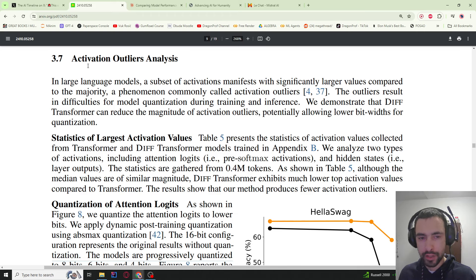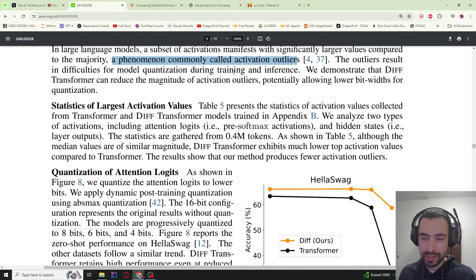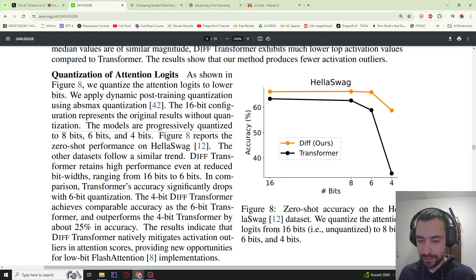They also reduce outlier activations in large language models. A subset of activations manifest with significantly larger values compared to the majority, a phenomenon commonly called activation outliers. The main problem this causes is you cannot quantize. For example, here in this graph they have a model that's 16 bits, and then they quantize it to 8 bits, 6 bit, 4 bits. The accuracy on HellaSwag dataset goes down dramatically as you go from 6 to 4 in the classic transformer. But in diff transformers it doesn't go down so much because this differentiation is reducing outliers as well.